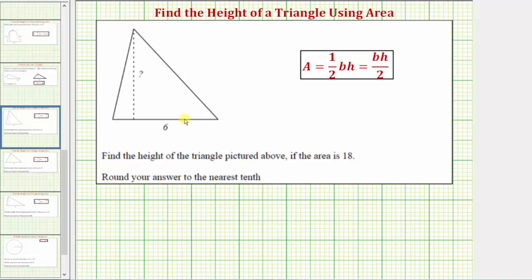We're asked to find the height of the triangle pictured above if the area is equal to 18 square units. The area formula for a triangle is area equals one-half base times height, where for the pictured triangle, this side is the base which has a length of six units, and this length is the height, which is unknown.